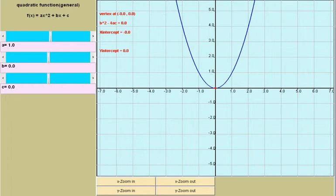This applet allows you to change the values of the parameters a, b and c on the left using the three sliders.